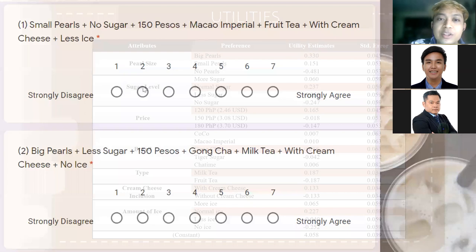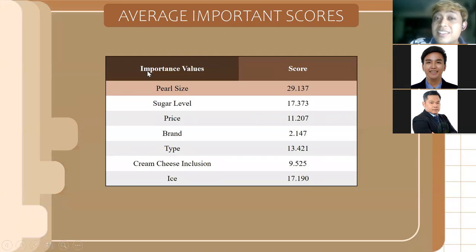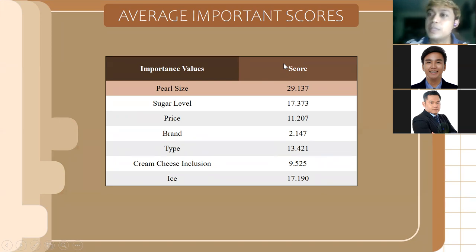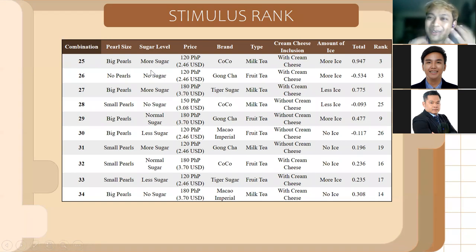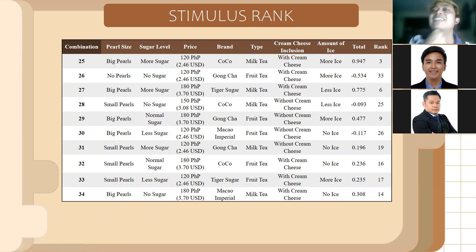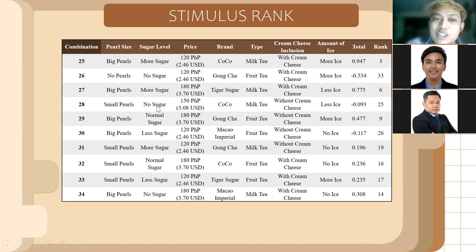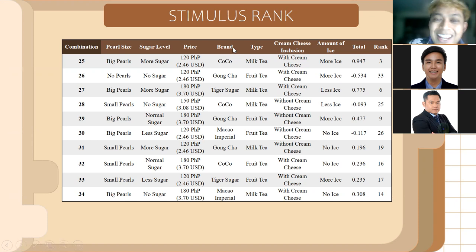Let me show you the results from the milk tea study. The attribute importance scores show: pearl size is number one, sugar level is number two, and ice amount is number three. The price has a relatively small effect because the range is just 120, 150, and 180 pesos — not a very big difference. The brand is not really important. If the price range were double or triple, it would have a bigger effect.